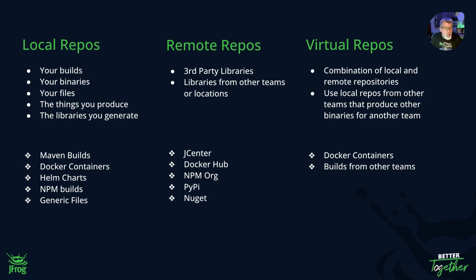Local repositories are where you store your builds. The binaries you use, the binaries you create, and things you just want to generally store in Artifactory. Whether you're using one of our 32 package types including our generic for things like Maven builds, Docker containers, maybe Helm charts, npm builds, and also generic objects like PDFs and maybe JPEGs. This is a place for you to store and organize.